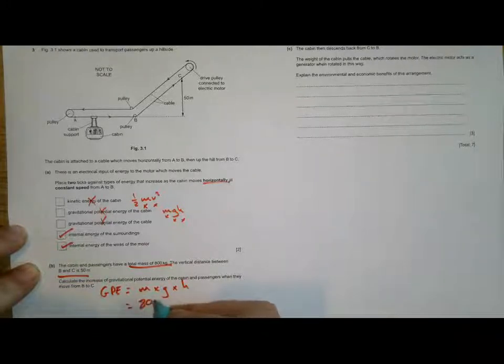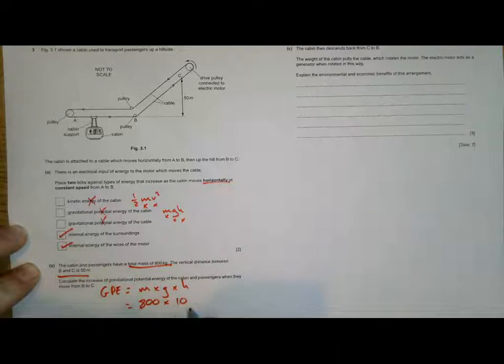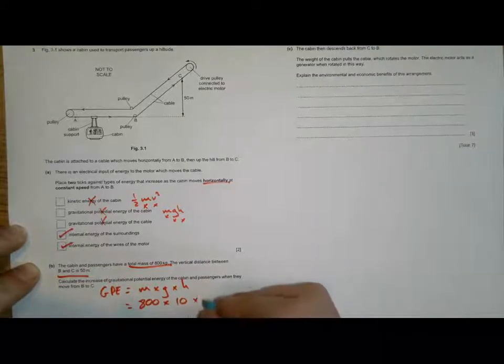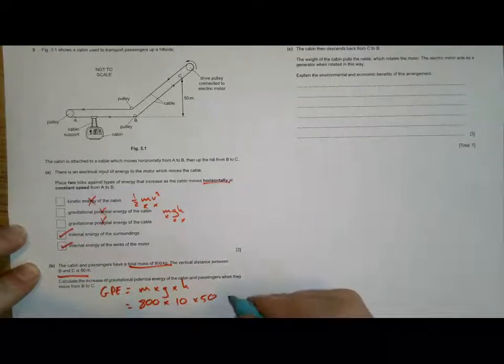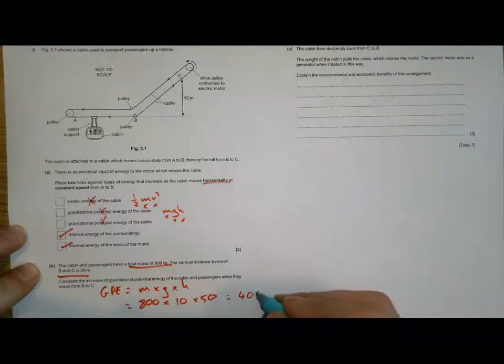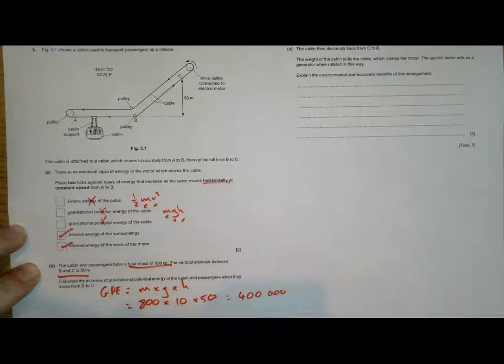The mass is 800, gravity is 10 newtons per kilogram, and the height is 50 meters. When we multiply that all together, we get 400,000 joules of energy.